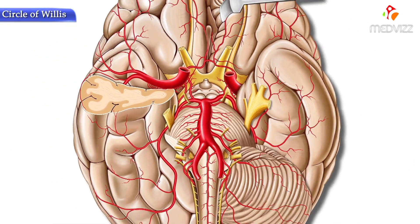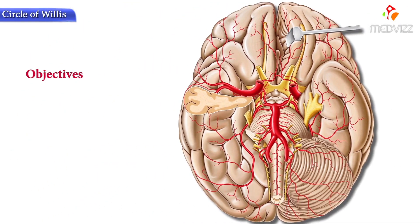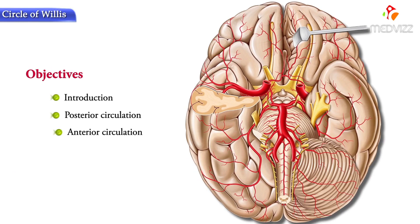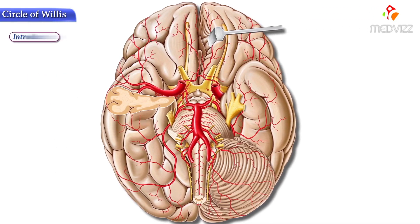Circle of Willis. The objectives to be looked at today are: introduction, posterior circulation, anterior circulation, importance, and clinical anatomy. Let's take a look at the introduction.